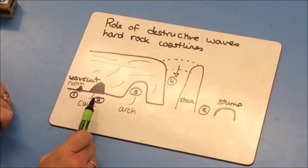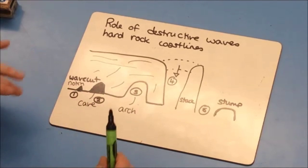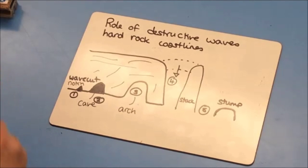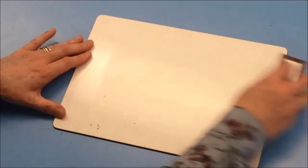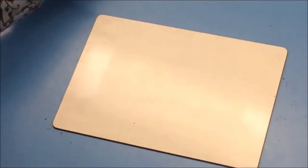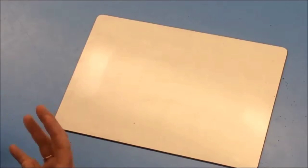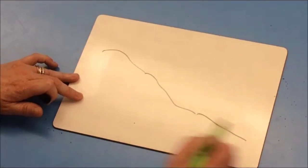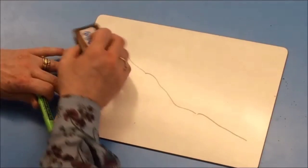Try to remember your five phases: notch, cave, arch, stack, stump. If you're struggling to write it in words, draw a diagram with good quality labels. Boulder clay coastlines can't form these features — when clay gets wet it just collapses and slumps away; it can't be moulded into shapes like chalk can.